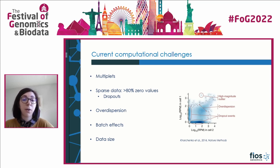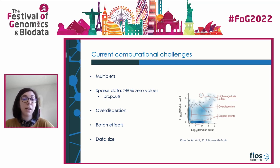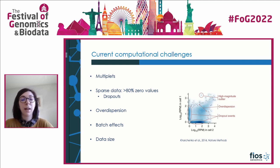A major issue of single cell data is sparsity. Single cell data consists of more than 80 percent zero values, partly because not all genes are present in all cells, but also because of what we call dropout events — when even though a gene is expressed in the cell, we fail to capture and measure it. This is biased against lowly expressed genes because there are fewer transcripts within the cell.